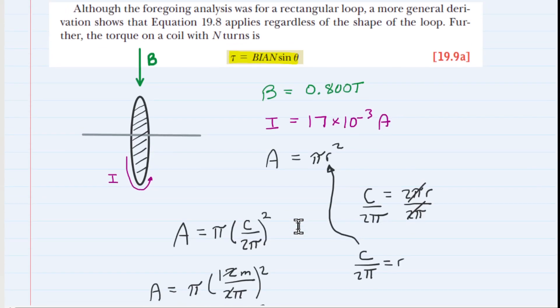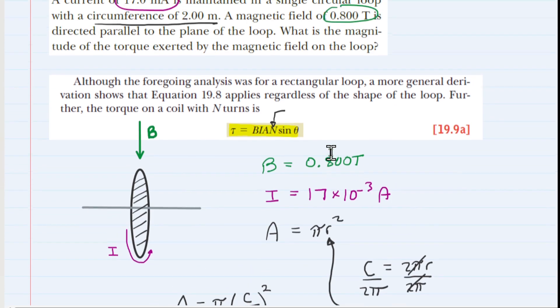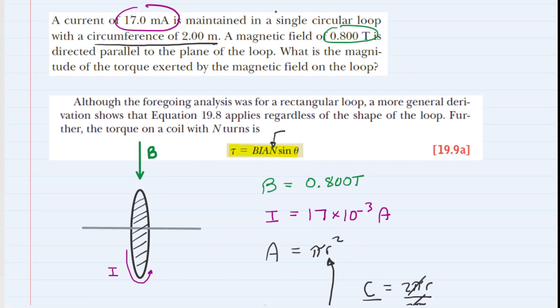Moving along in the equation, we encounter n. n is simply the number of loops in the situation described. If you go back and read this, it says we have a single circular loop. So n would just equal 1.